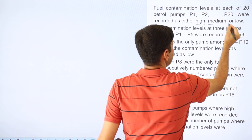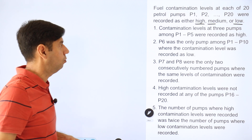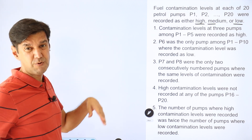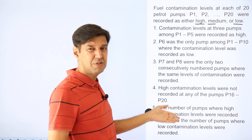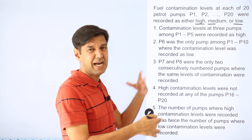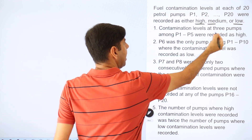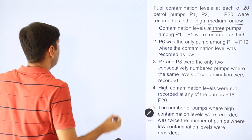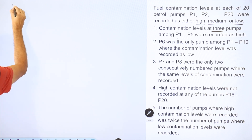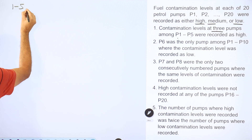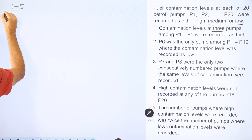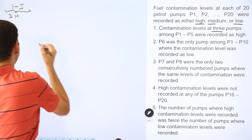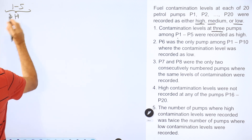The first challenge is that 20 is a lot of numbers. Do I have to write all 20? Let's read through the clues and decide as we read how to represent it. The contamination level at three pumps among 1 to 5 were recorded as high. So I take the group 1 to 5 as one single group — in all five, there are three high, so the others will be medium or low.